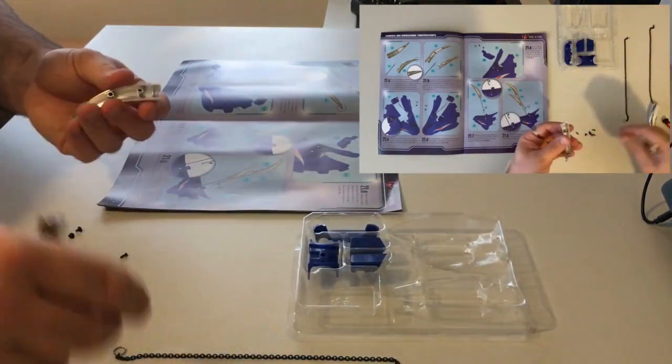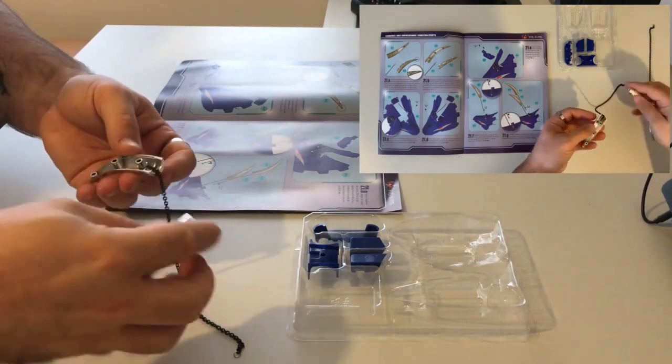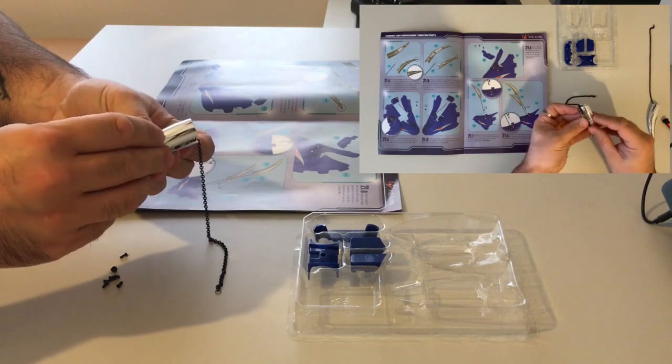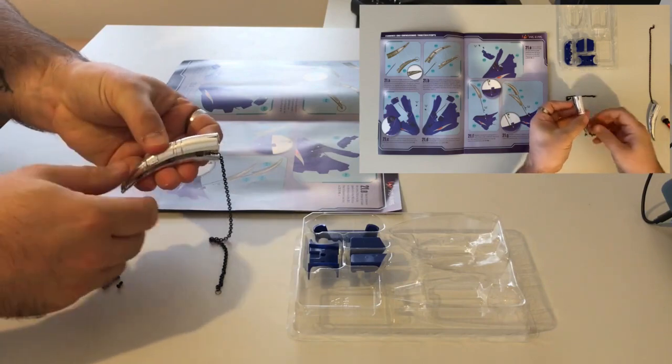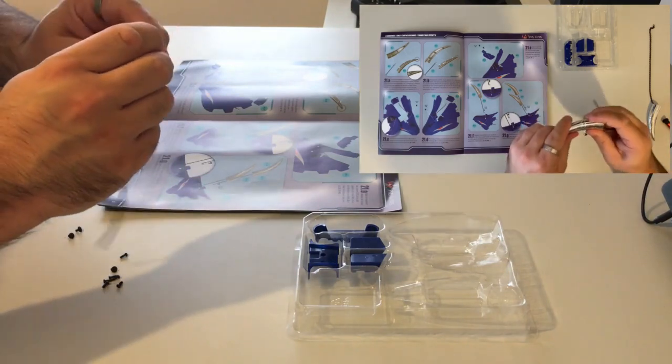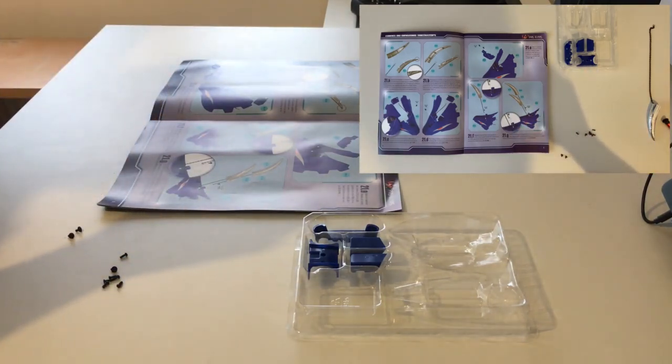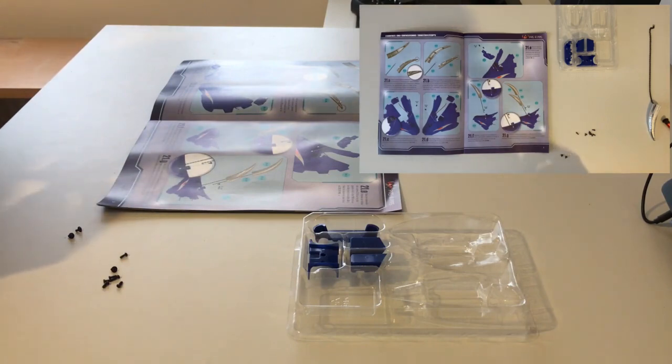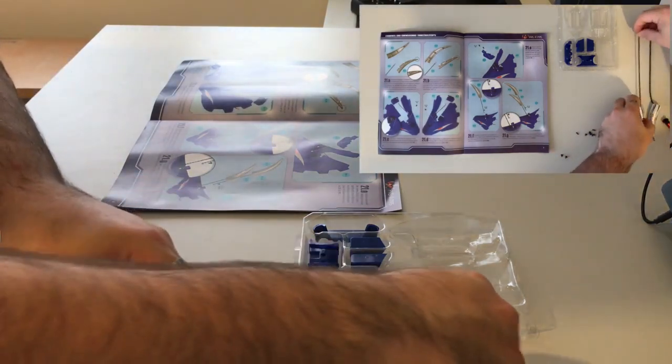And then we're going to do the same with 21-3 and 4 and the other chain from 21-9. So drop the chain end in the post and click them together. The instructions do say you can add glue if you need to at the horn tips. I didn't bother because mine fitted together tightly enough that I didn't think it was necessary.